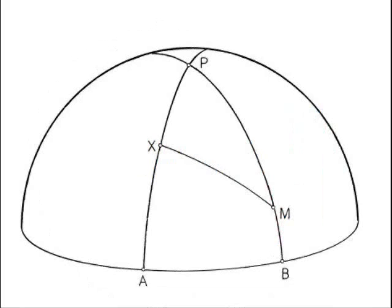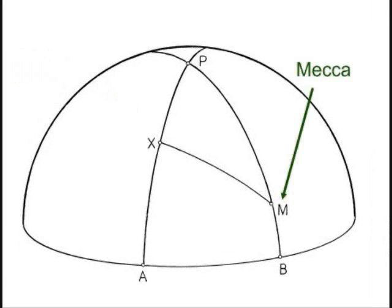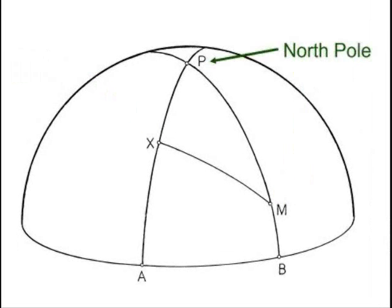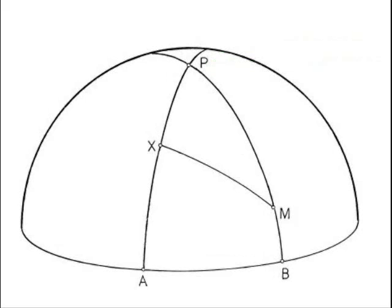Let us bring up a diagram used earlier when looking at Al-Khalili's works. To determine the direction towards the Kaaba, all we need to do is focus on three points in the world. Those three points would be one's current location, Mecca, and the North Pole. We would construct the following three great circles.